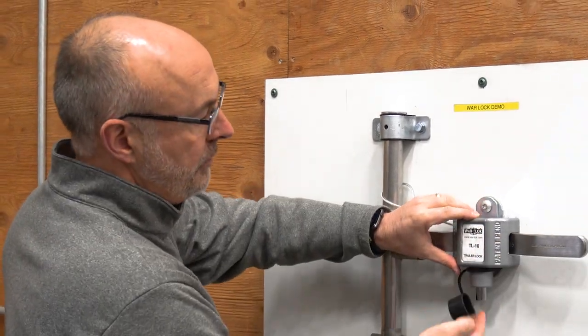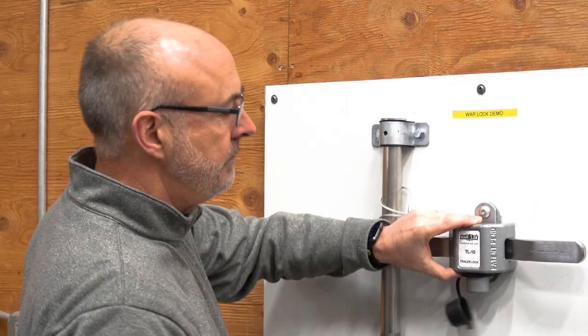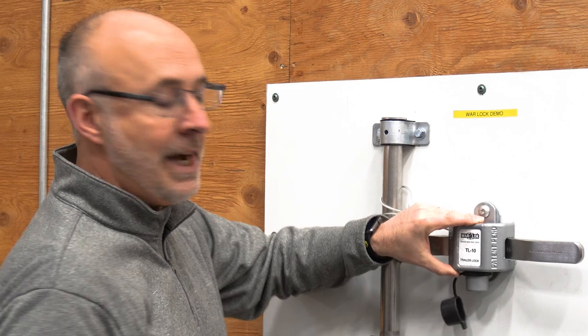Then, all you have to do is push up on the lock assembly with a finger or two. It is now secured to the trailer. The door is now locked.